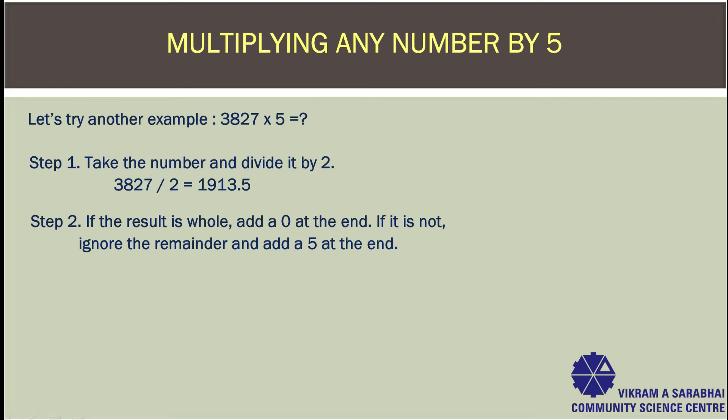Step 2: If the result is a whole number, add a 0 at the end. If it is not, ignore the remainder and add a 5 at the end. Here, it's a fractional number, so ignore the remainder and add 5. Hence, the answer will be 19135.